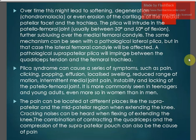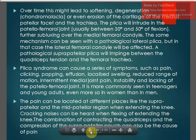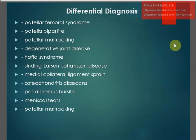A pathological suprapatellar plica will impinge between the quadriceps tendon and the femoral trochlea. Plica syndrome can cause a series of clinical symptoms such as pain, clicking, crepitus, popping, effusion, localized swelling, reduced range of motion, intermittent medial joint pain, instability, and locking of the patellofemoral joint. It is more commonly seen in teenagers and young adults, and is more common in women than in men. Pain can be located in the suprapatellar and mid-patellar region, and cracking noises can be heard when flexing or extending the knee.